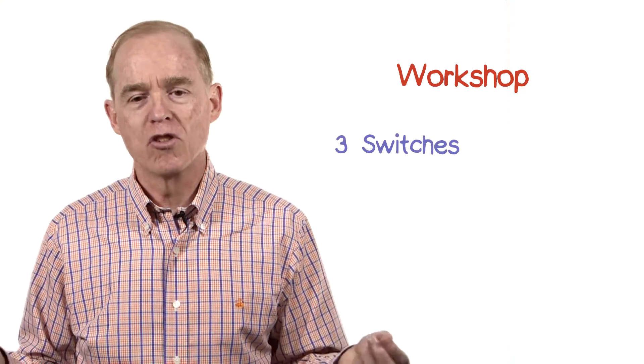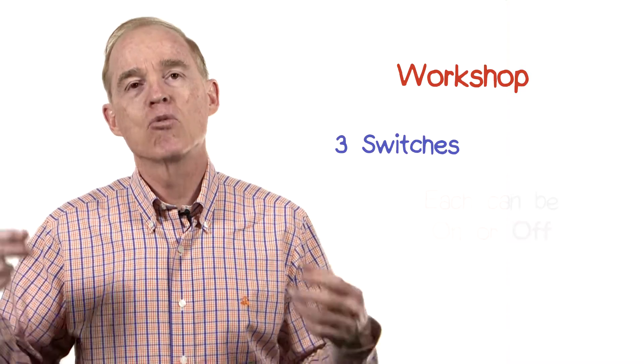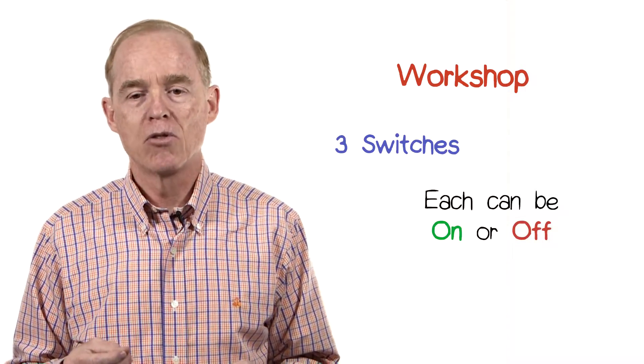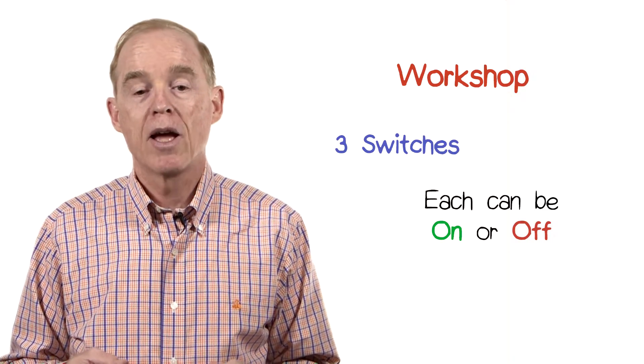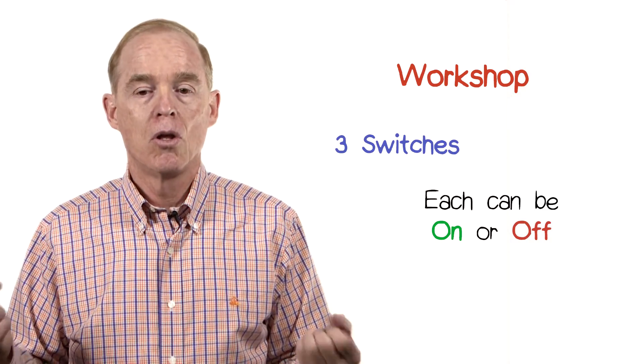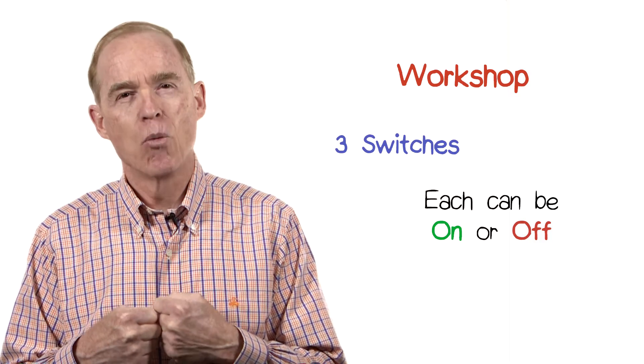Let's imagine that we have a workshop and there are three switches. Each of the switches can have on and off as possible values. So we're going to have three columns and eight rows.